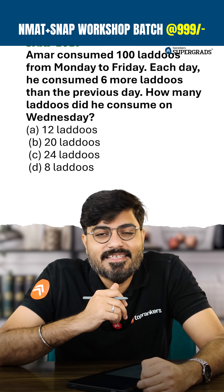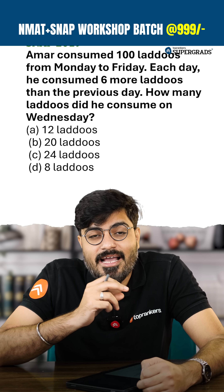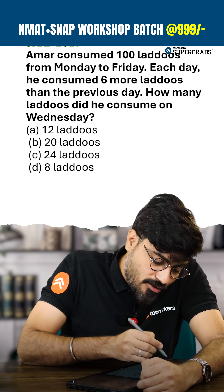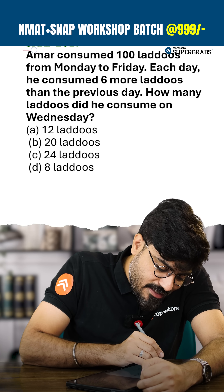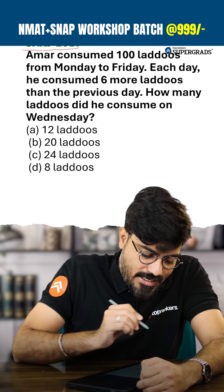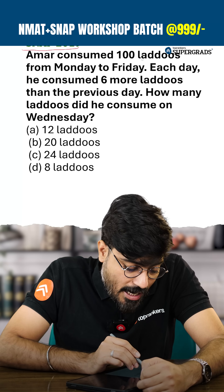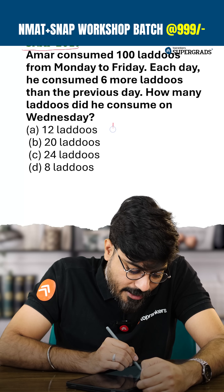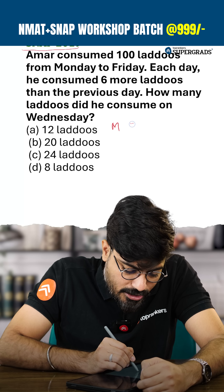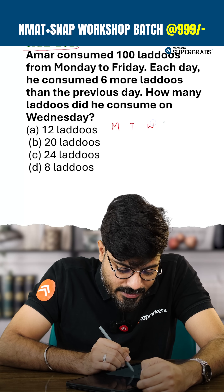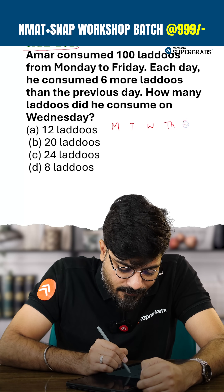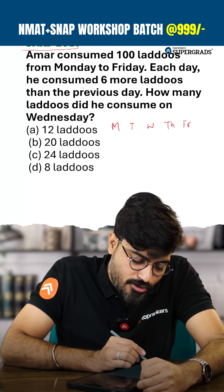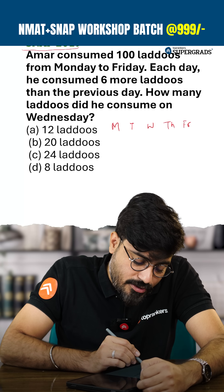Welcome to the DILR 60-second series. Here we are looking at a question from SNAP 2019. Amar consumed 100 ladoos from Monday to Friday — Monday, Tuesday, Wednesday, Thursday, and Friday — and each day he consumed 6 more ladoos than the previous day.